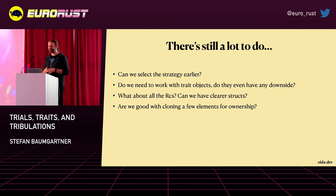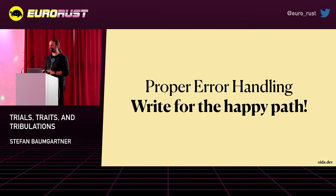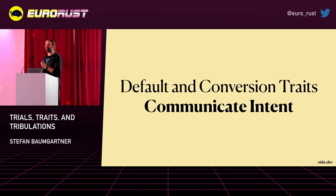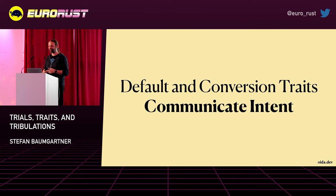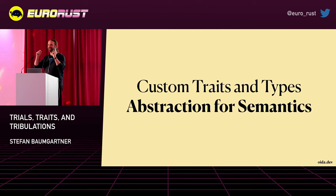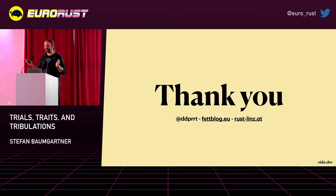Main takeaways: have proper error handling — write for the happy path, this is what you want. Work with default and conversion traits to communicate intent — they are provided from the standard library and you can use them to tell yourself and your colleagues what you actually want to achieve. Use custom traits and types to abstract for the semantics of your application. And with that, thank you. I'm Stefan, I'm here all day, and it's very nice to speak in front of this audience.